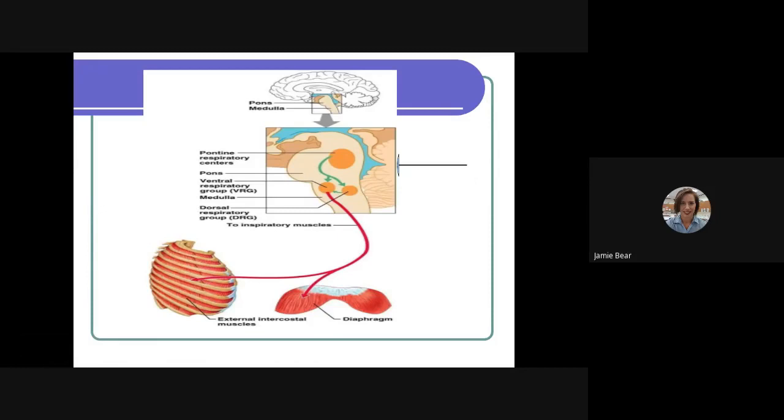Both of the dorsal and ventral neurons in our medulla oblongata send these efferent signals to both the muscles of our diaphragm and our intercostal muscles.